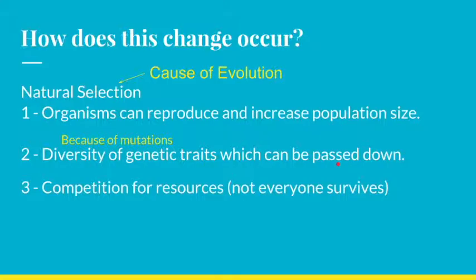Number three, there must be — and there always is — competition for resources. Resources can mean lots of different things: food or water, shelter, or the ability to hide from predators. Essentially, competition for resources means that not everyone survives. Organisms have the ability to increase their population size, but not everyone survives.